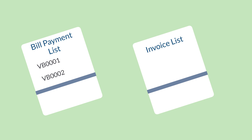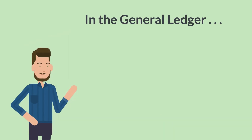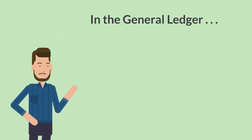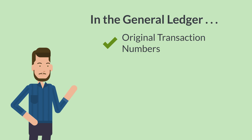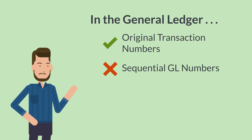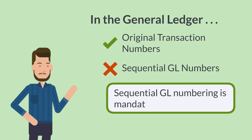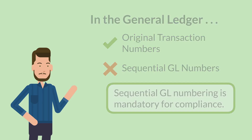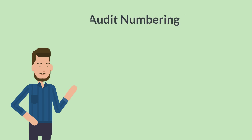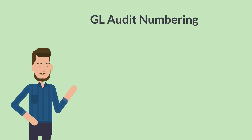For example, INV0001, INV0002, etc. In the general ledger, these transactions appear with their original transaction numbers instead of receiving new sequential GL numbers. But for some countries, sequential GL numbering is a compliance requirement. This is where the GL Audit Numbering feature comes in.